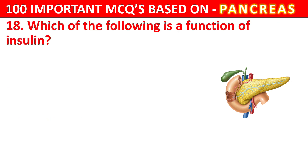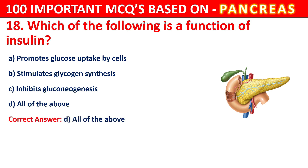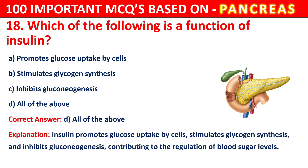Question 18. Which of the following is a function of Insulin? Options are Promotes glucose uptake by cells, Stimulates glycogen synthesis, Inhibits gluconeogenesis, or All of the above. The correct answer is D, that is All of the above. Insulin promotes glucose uptake by cells, stimulates glycogen synthesis, and inhibits gluconeogenesis, contributing to the regulation of blood sugar levels.